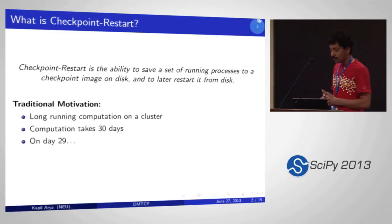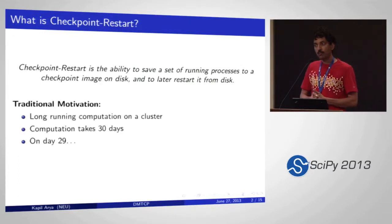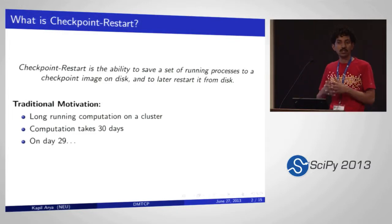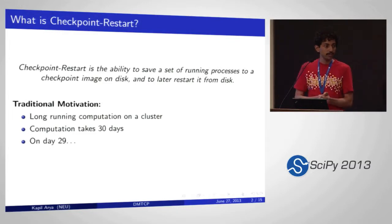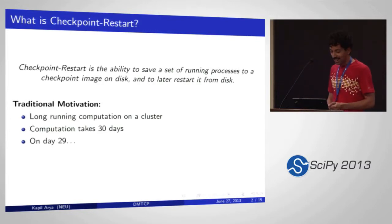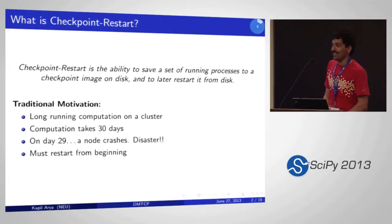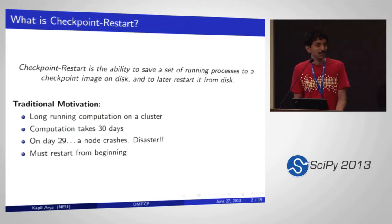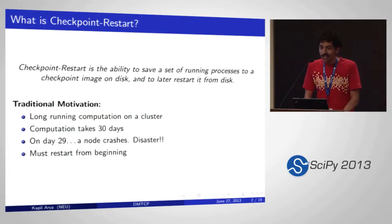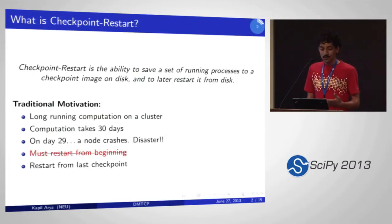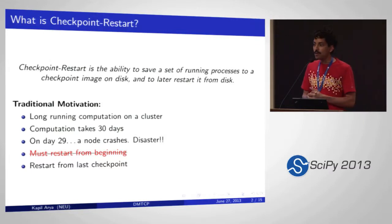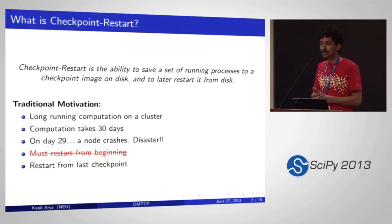The very traditional motivation for checkpointing was fault tolerance. If you have a really long-running computation going over 30 days, and on day 29 a node crashes, that's a disaster. You don't want to restart all over again. But if you have checkpointing, you can restart from the last checkpoint image. In a naive scenario where you checkpoint every six hours, in the worst case you lose six hours of computation as opposed to losing all 29 days.